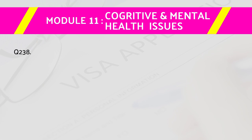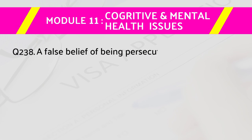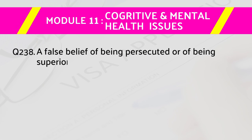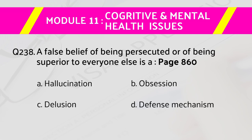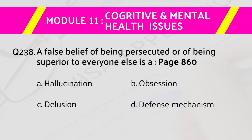Question number 238: A false belief of being persecuted or of being superior to everyone else is — page number 860. Answers are: a) hallucination, b) obsession, c) delusion, d) defense mechanism. The right answer is c) delusion.